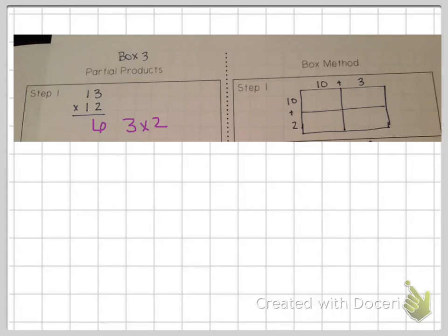So our first step is to do three times two, which is six, which would go in the box that connects to where three and two meet. That's the same little section on the area model where we colored in, or drew a box around those six squares. So that's our first step on both methods.